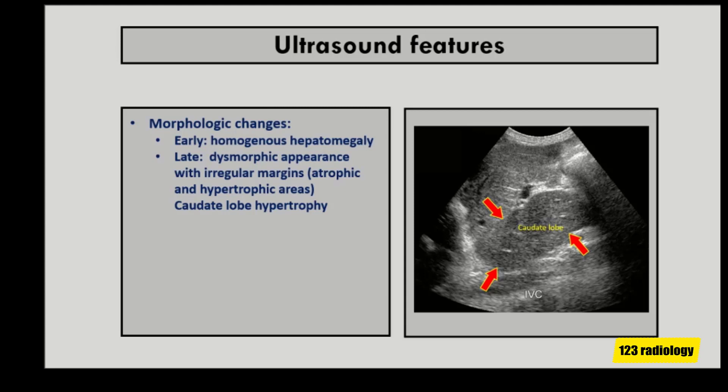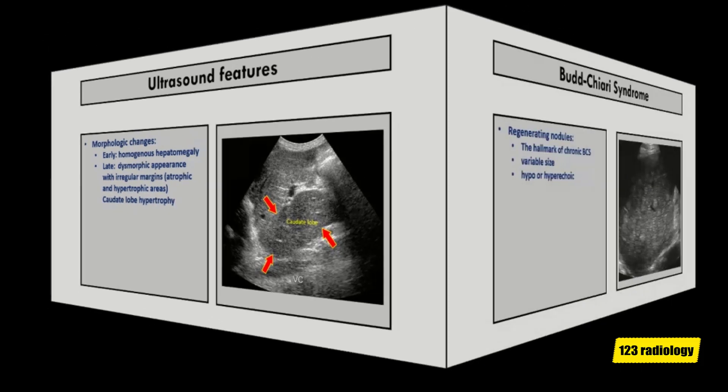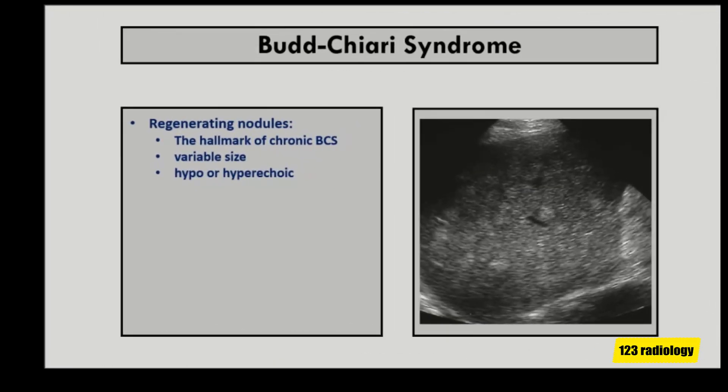Caudate lobe hypertrophy is a frequently noted morphological sign in Budd-Chiari syndrome. Regenerating nodules are the hallmark of chronic Budd-Chiari syndrome. They are commonly multiple and variable in size. On ultrasound, regenerating nodules may be hypo- or hyperechoic, as seen on this image.